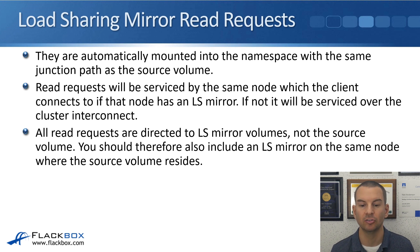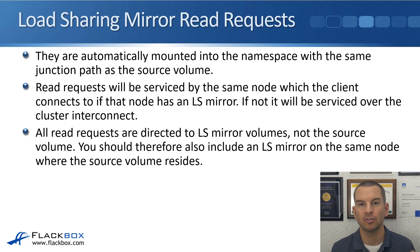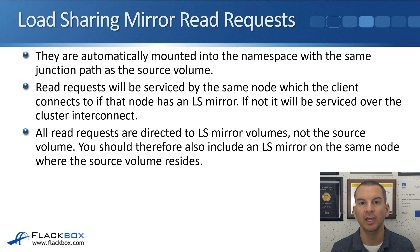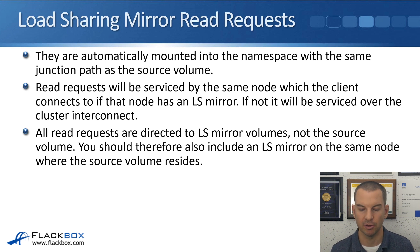All read requests are directed to the load-sharing mirror volumes, not the source volume. You should therefore also include a load-sharing mirror on the same node where the source volume resides. That's a little counterintuitive — you would think you'd want destination volumes on different nodes, but you also want one on the same node as the source volume. The reason is because read requests always go to a load-sharing mirror, so if a client connection hits that node, you want a destination volume there to service read requests rather than going over the cluster interconnect.